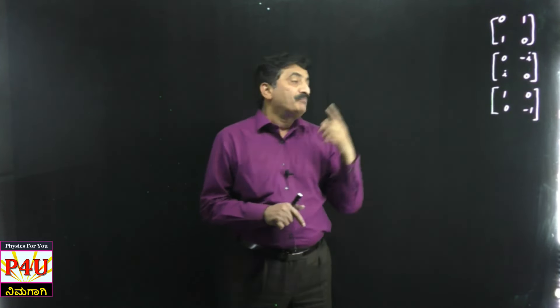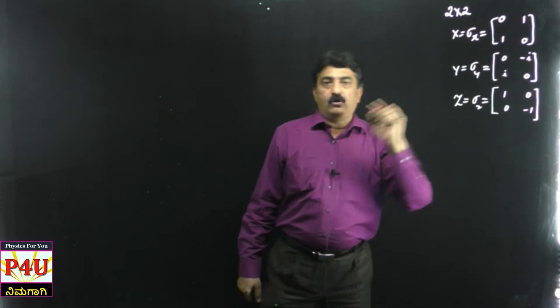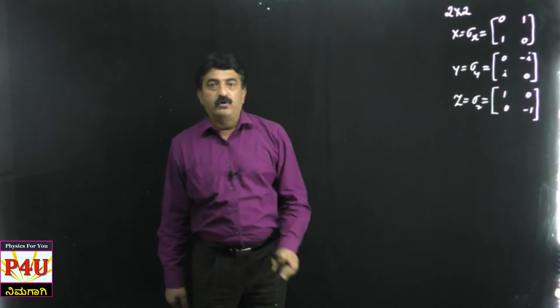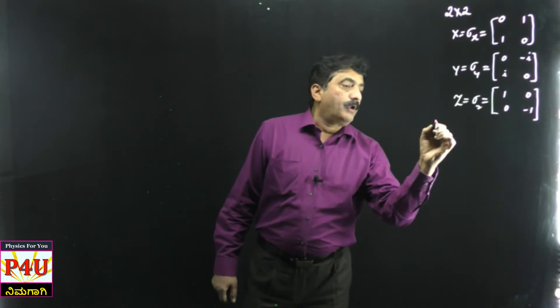The X matrix is [0, 1; 1, 0]. Of course, they are all 2×2 matrices - 2 rows and 2 columns. The Y matrix is [0, -i; i, 0], and the Z matrix is [1, 0; 0, -1].